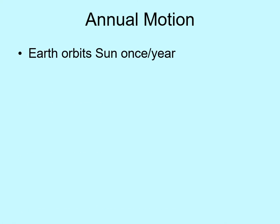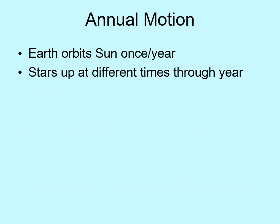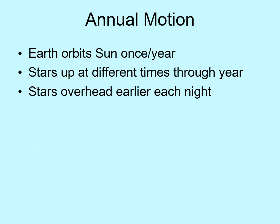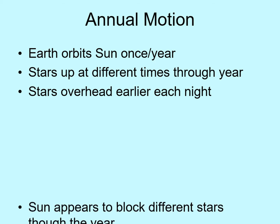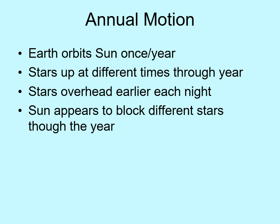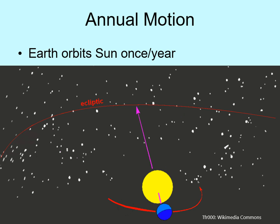Now let's add on the fact that the Earth is also orbiting around the Sun each year. This is going to mainly affect when a given star is up in the sky. If a star is overhead at midnight this month, then as the Earth orbits around the Sun, the time that star is overhead will change. Since the spin and orbit are in the same direction, the star will be overhead earlier each night. In the course of a night, we rotate around to see most of the sky. However, there will always be a piece of the sky that is blocked out by the Sun. As we orbit the Sun, the piece that is blocked out will slowly shift. In this animation, you see how the Earth's motion causes the Sun to block different stars.